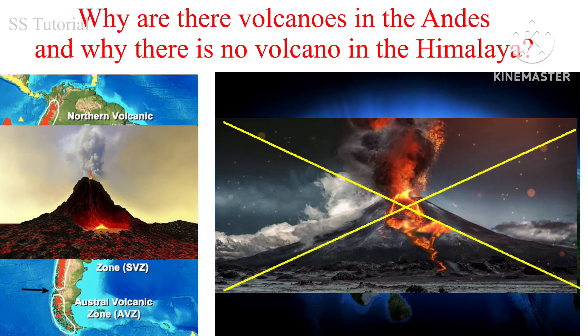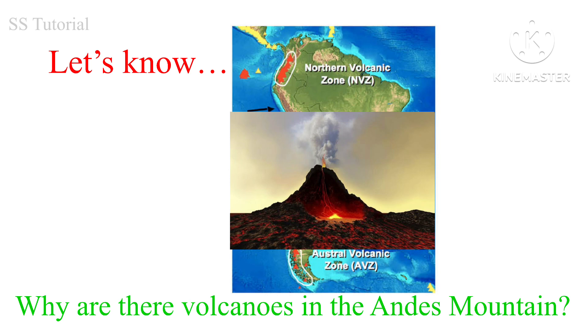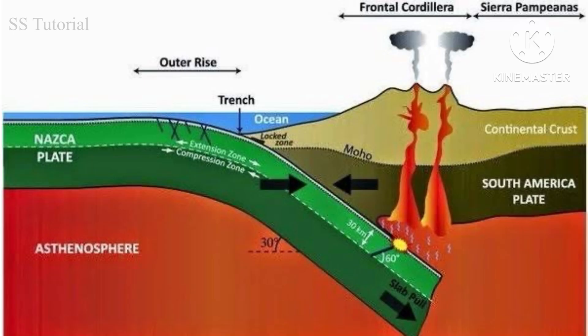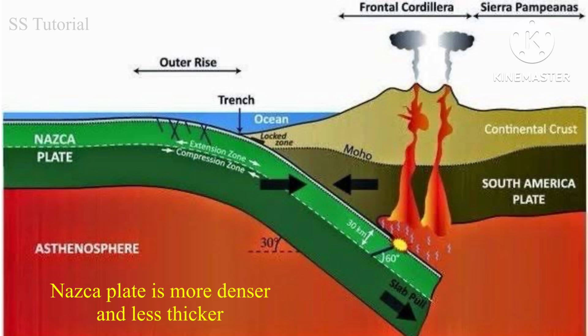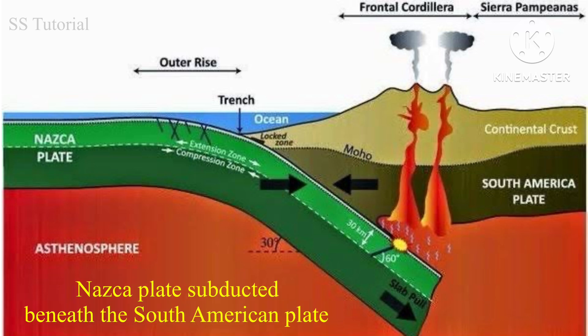Now it is easy to understand why the Andes has volcanoes and why the Himalayas do not. The Andes mountain originated due to the convergence of the Nazca plate and the South American plate. The Nazca plate is an oceanic plate and the South American plate is a continental plate. Since the Nazca plate is an oceanic plate, it is denser, less thick, and carries water-saturated sediments. So at this convergent plate boundary, the Nazca plate is subducted beneath the South American plate.